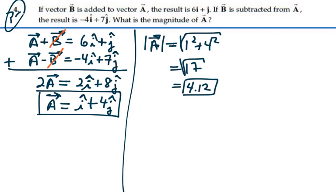So the magnitude of vector A, under these conditions, is 4.12.